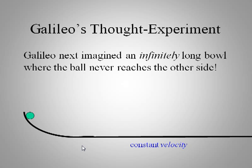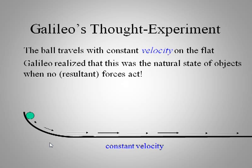Well what if you made the bowl really big? You would have essentially constant velocity here forever. He said hey this is what objects do naturally. This is their natural state. Constant velocity.